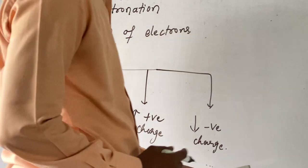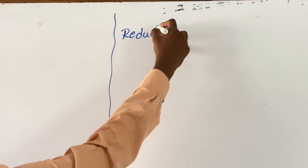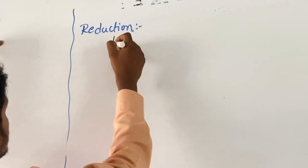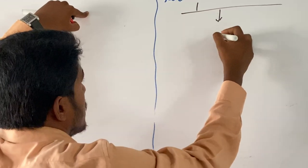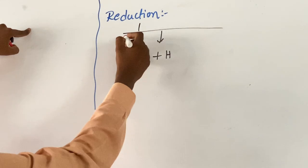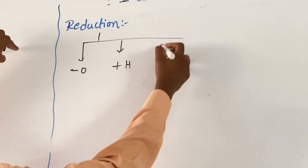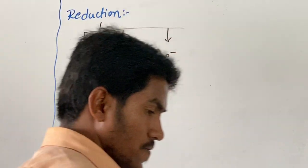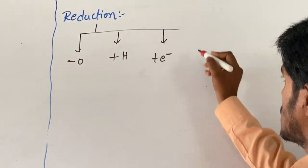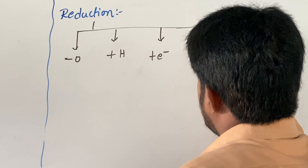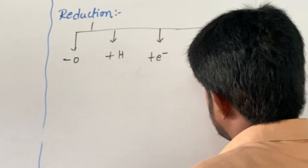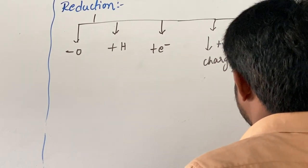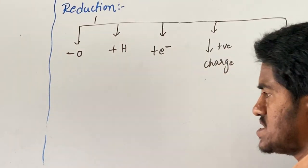Now in the same way, the reduction reaction in all those aspects: in case of electrons, gaining of electron — electron negativity. With respect to oxidation number, decrease in positive charge, or increase in negative charge — that represents reduction reaction.